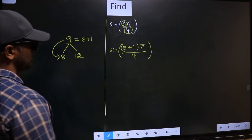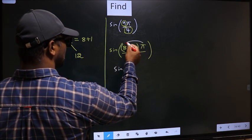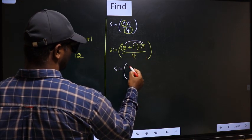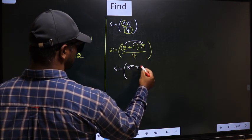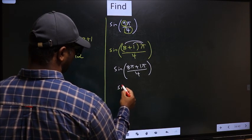Next, sine of—now, you should open up the brackets. You get 8π plus 1π by 4.